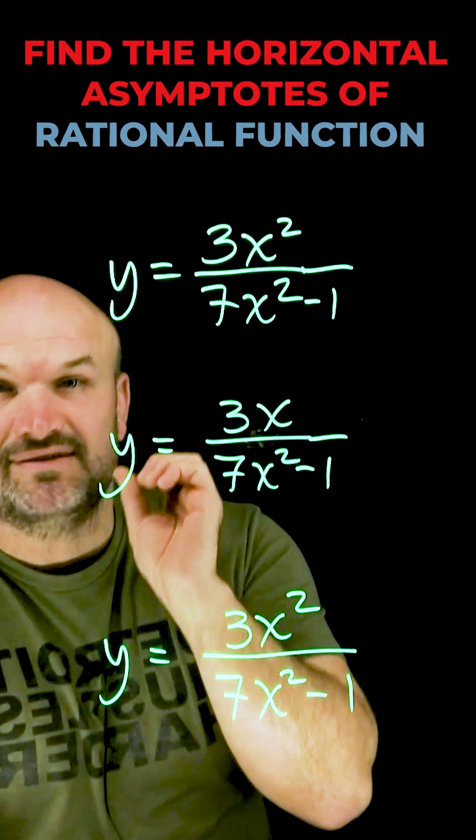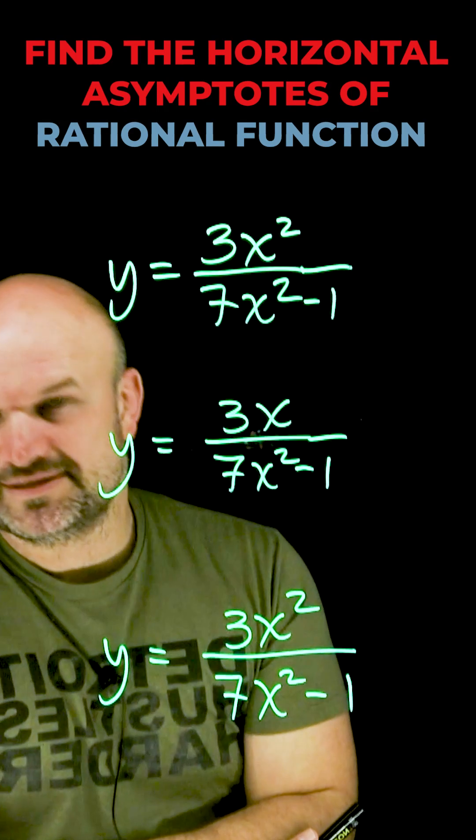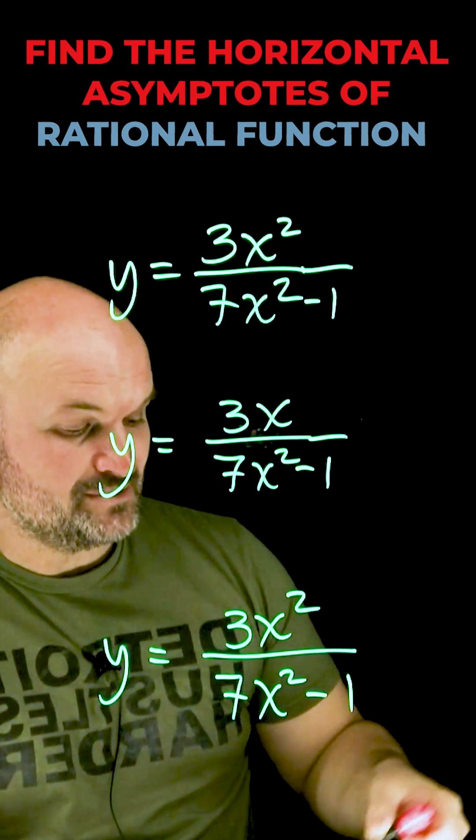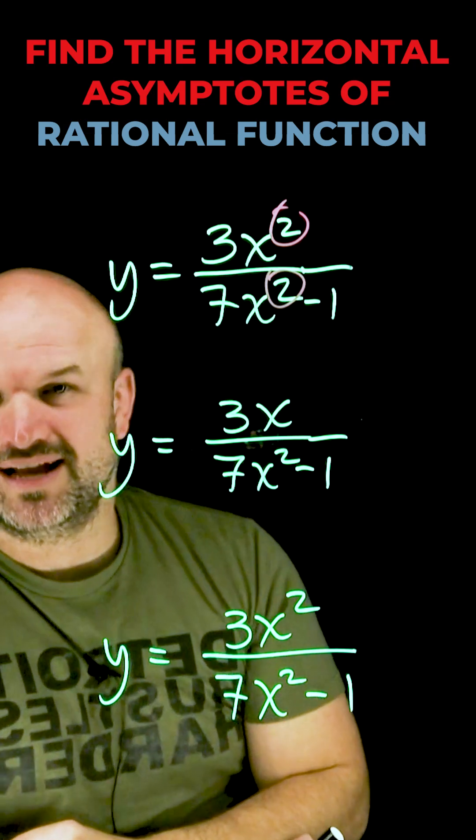When you're graphing a rational function, it's very important to make sure you know how to identify the horizontal asymptotes. To identify the horizontal asymptotes, all we need to focus our attention on is our degrees in our numerator and our denominator.